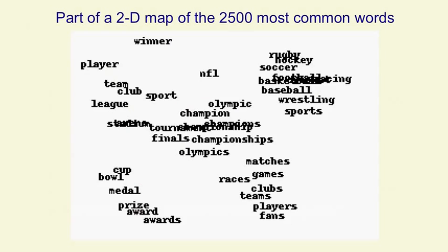So here's part of a two-dimensional map in which we laid out the two and a half thousand commonest words, and you'll see this part of the map is all about games. Not only that, it's got similar kinds of words together. So matches and games and races are together.